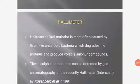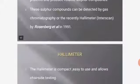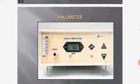The Halimeter: Halitosis or oral malodor is most often caused by gram-negative anaerobic bacteria, which degrade proteins and produce volatile sulfur compounds. These compounds can be detected by gas chromatography or the recently developed Halimeter by Rosenberg et al. in 1991. The Halimeter is compact, easy to use, and allows chair-side testing. However, its performance lacks specificity in analyzing the different components of mouth air compared to the gold standard of gas chromatography with flame photometric detection. This is a Halimeter.